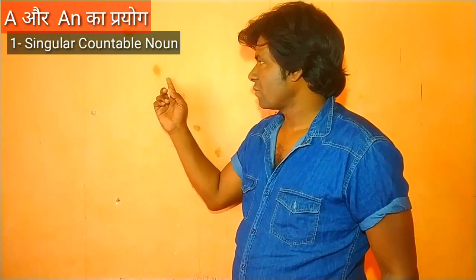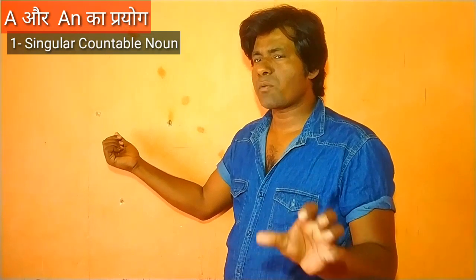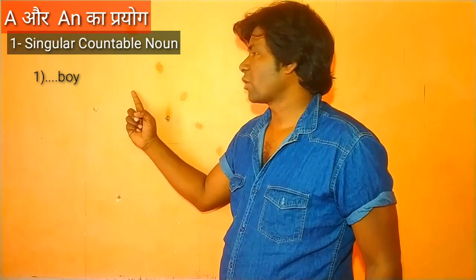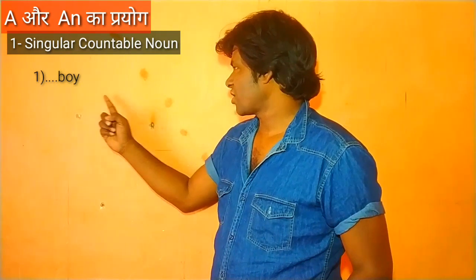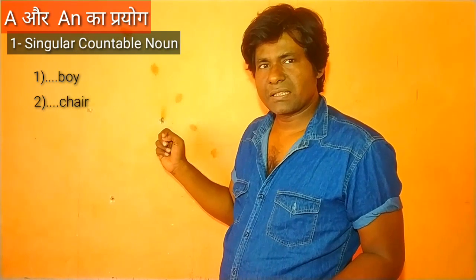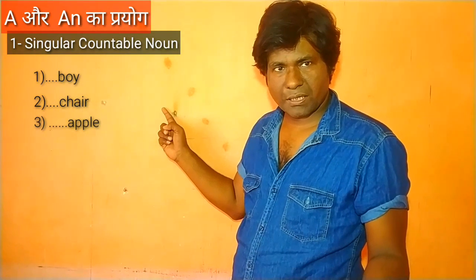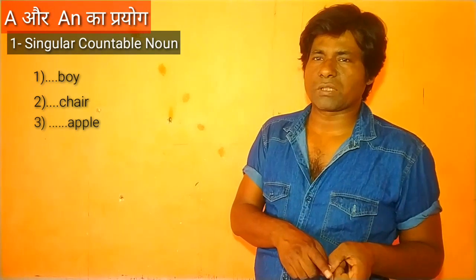Pehle — singular countable noun. Aise noun jiske pehle hum ginti kar sakte hain aur jo singular ho, uske pehle hum 'a' ya 'an' laga sakte hain. Jaise — 'a boy': boy singular countable noun hai, isliye 'a' laga sakte hain. 'A chair': chair bhi singular countable hai, isliye 'a' laga sakte hain. 'An apple': apple bhi singular countable hai, lekin 'a' nahi, 'an' lagate hain, kyonki apple mein vowel sound se shuru hota hai.